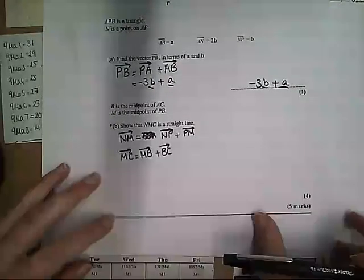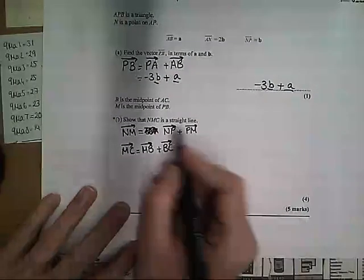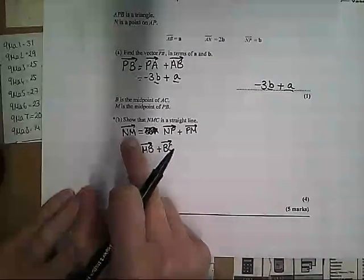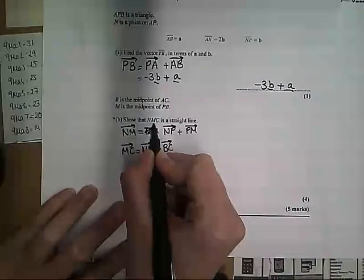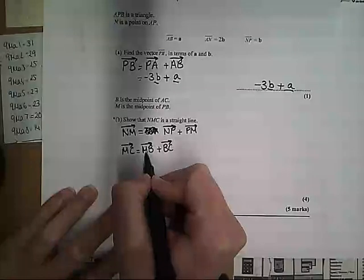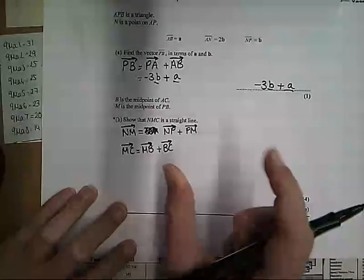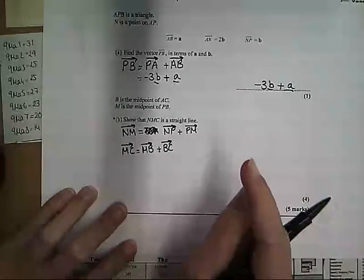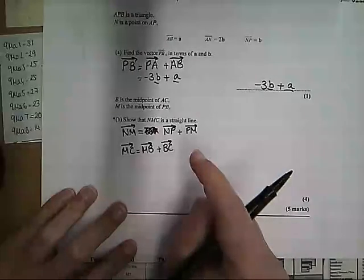So join me back where we are. We've got to show that NMC is a straight line. What we're going to do is the vector N to M, and then the vector M to C, and we're going to hopefully show that they are parallel and that they share the common point, and in this case our common point is going to be M.